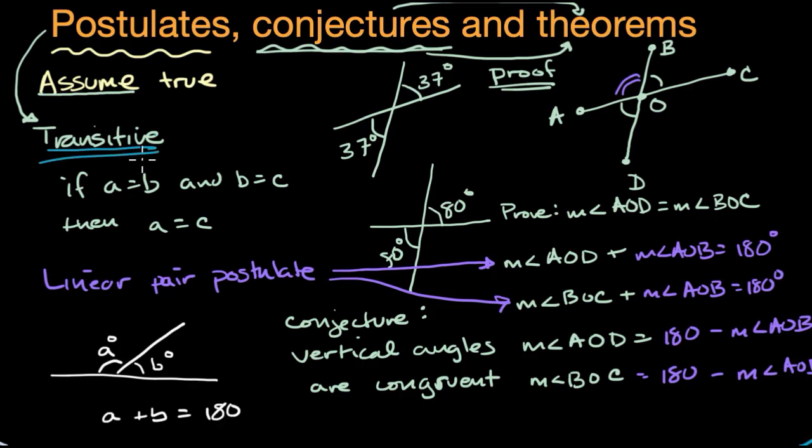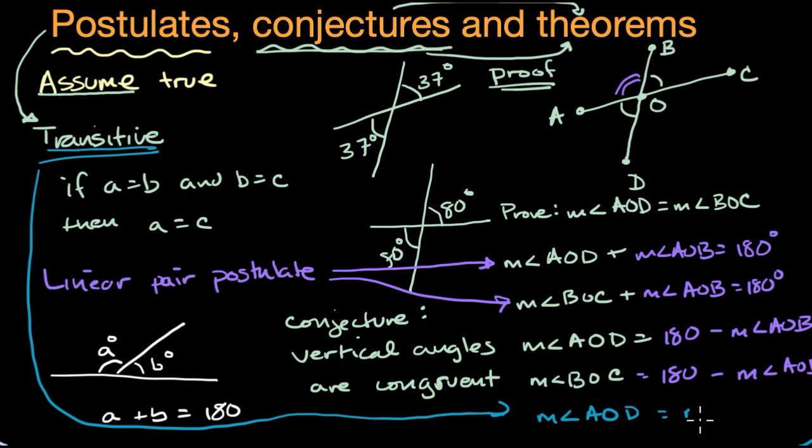And then we could use this other postulate right over here, the transitive postulate, or transitive property of equality, to then say, all right, if these two things are equal to the same quantity, they must be equal to each other. So the measure of angle AOD must be equal to the measure of angle BOC. And if you have two angles that no matter where they are, they have the same measure, well, I just proved what I want to show.